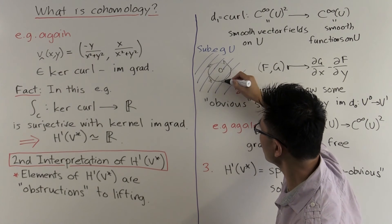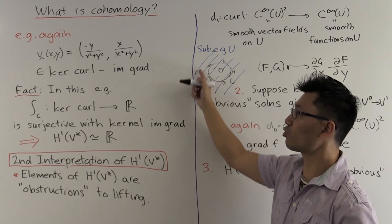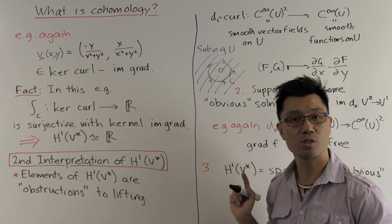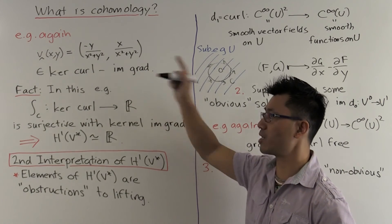It goes around the circle essentially in the same direction. If you integrate this, you'll get something which is non-zero. And hence, it's not in the image of the gradient function.